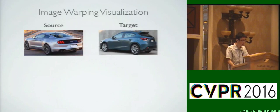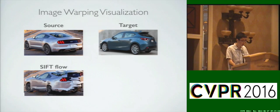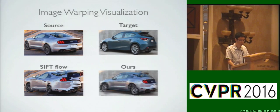Now let's look at some results. Our first experiment visualizes the alignment quality by warping the source image to look like the target image based on the predicted correspondence. This is a very challenging task since the two cars have significant pose and appearance difference. Not surprisingly, traditional methods like C-Flow perform poorly on this task. Here is our warping result, which aligns with the shape of the target image much more closely and does not have severe distortions like C-Flow.